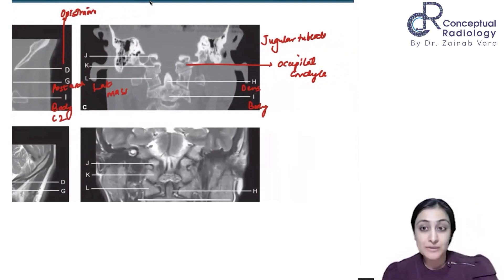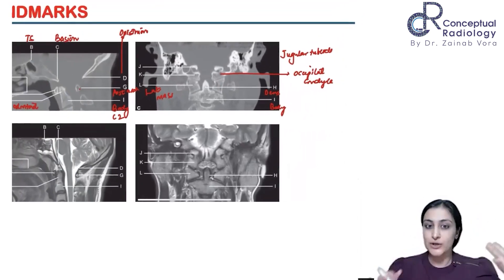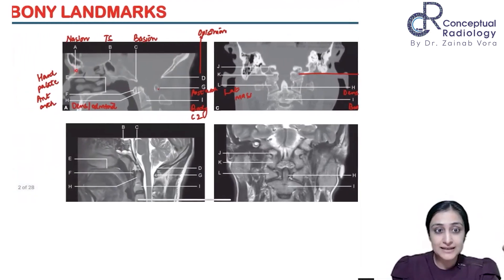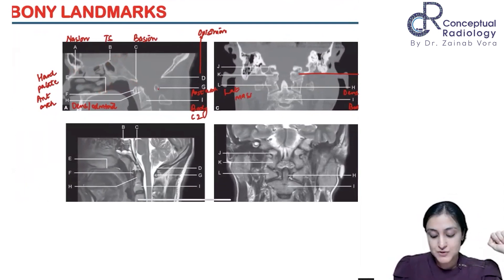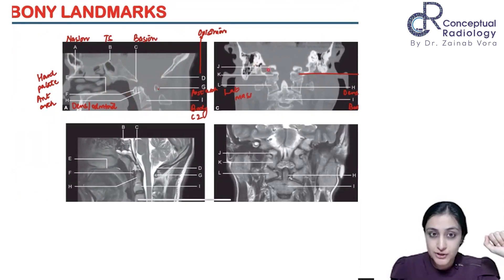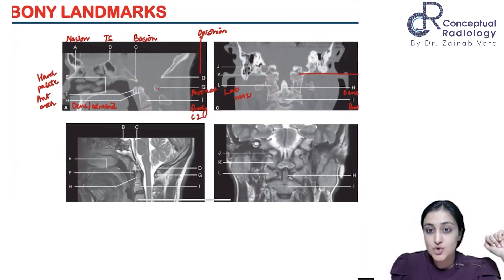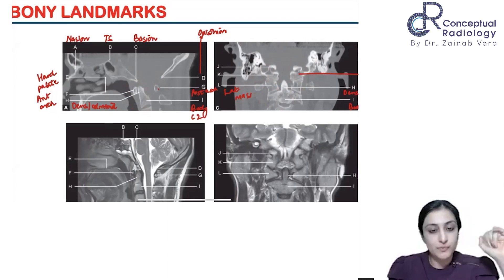This is the normal anatomy — all of you from first years to final years should have this. One quick refresher: anteriorly we have nasion, tuberculum sellae, and hard palate. Then basion, opisthion, atlas anterior and posterior arch, dens. On coronal we have jugular tubercle forming the occiput, lateral masses, and C2. Basically occiput, atlas, and C2 — these are the two joints. We always assess symmetry in terms of distance and joint space on both sides. No need to memorize — this is all about symmetry.